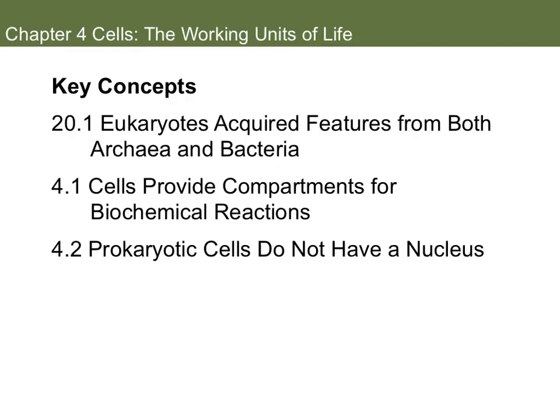Here are some of the key concepts we're going to cover in this first part of your notes. First, we're going to talk about how eukaryotes acquired features from both archaea and bacteria. This is going to be a little bit into Chapter 20, where we talk about the endosymbiotic theory. Then we move on to Chapter 4, where we talk about cells and how they provide chemical compartments for biochemical reactions. And then we look at 4.2, where we compare prokaryotic cells, which do not have a nucleus, to eukaryotic cells.